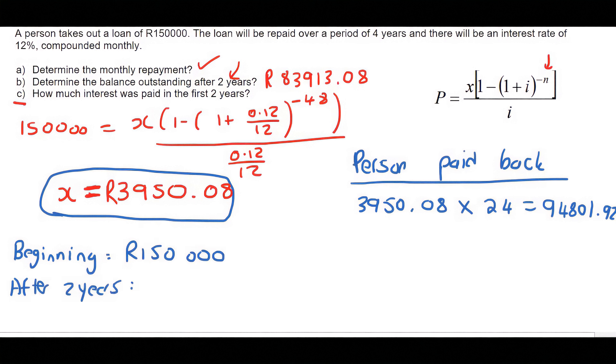So we still have an outstanding balance of 83,913.08. So how much has the loan gone down by? Well, so we can say loan has decreased by.